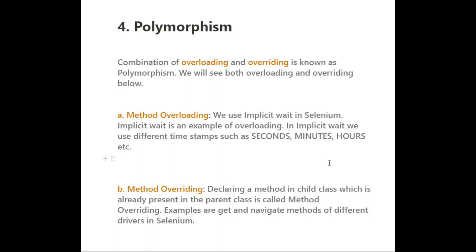The fourth OOP concept is polymorphism, which allows us to perform a task in multiple ways. Polymorphism is a combination of method overloading and method overriding. Method overloading means a method has the same name but different arguments. Method overriding means declaring a method in a child class that already exists in the parent class.